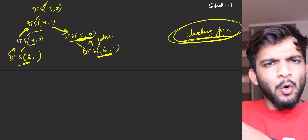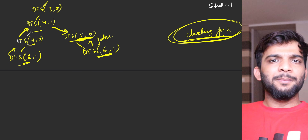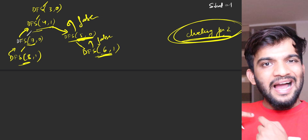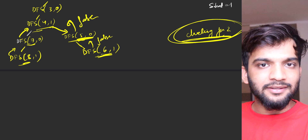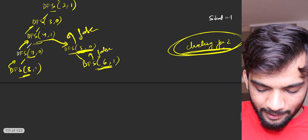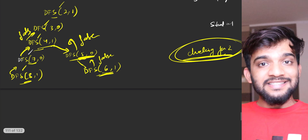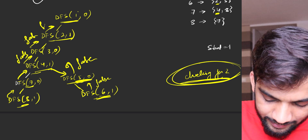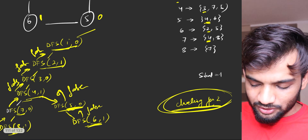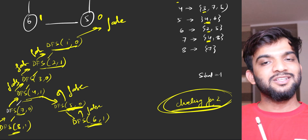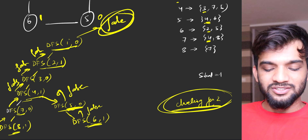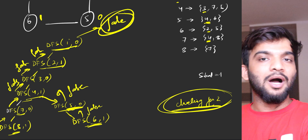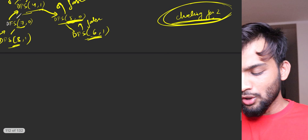Six says when checking node two, it has the same color as six, so it is not bipartite - return false. DFS of five called six, and six says it cannot be bipartite, so five also returns false. Four called five - false. Three called four - false. Two called three - false. One called two - false. So ultimately everyone returns false, giving the final answer that this graph is not bipartite.